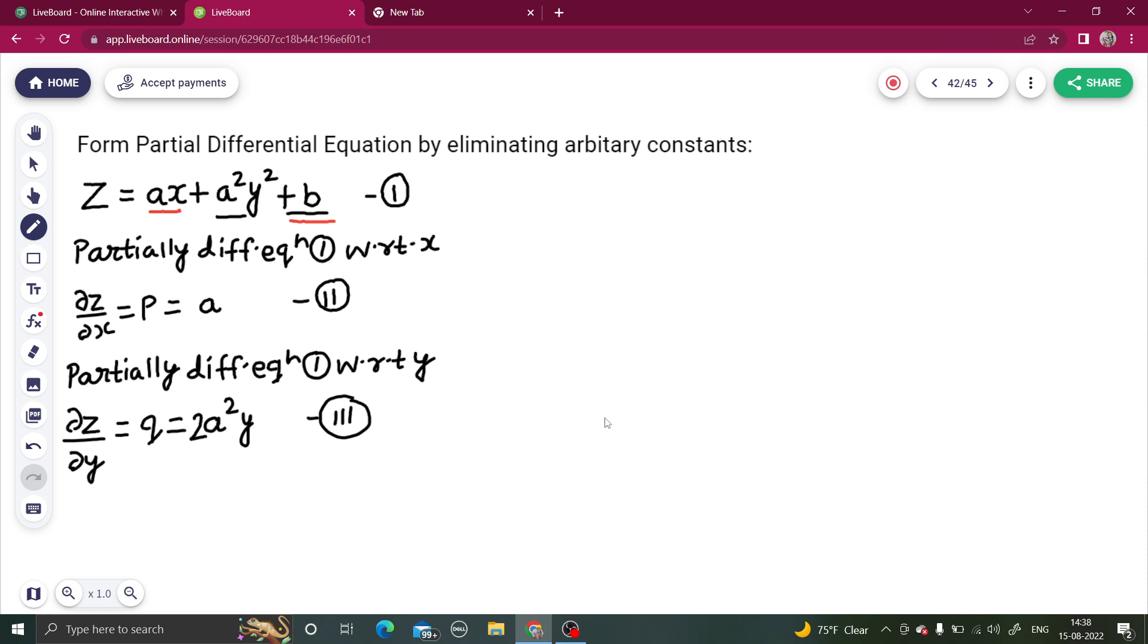Let's name this as equation number 3. Now what can we do? In place of a we can put p here in place of 2a square y. Wait, just modify this equation a little bit, then we will name it as equation number 3. I will write q by 2 will be your a square y.